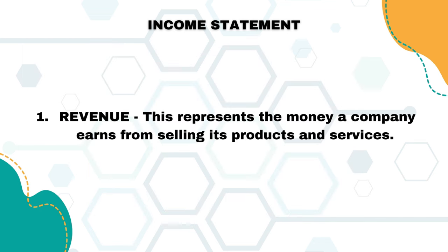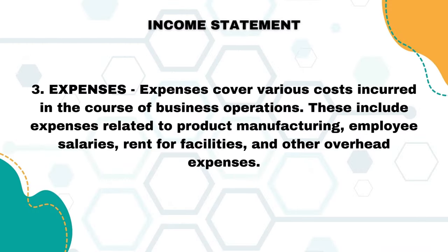One: Revenue. This represents the money a company earns from selling its products and services. Two: Expenses. Expenses cover various costs incurred in the course of business operations. These include expenses related to product manufacturing, employee salaries, rent for facilities, and other overhead expenses.